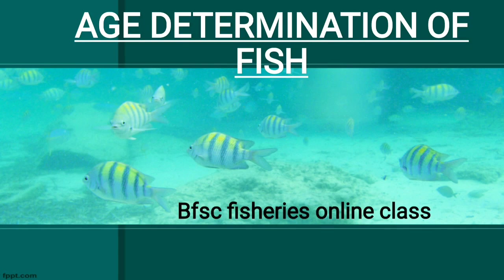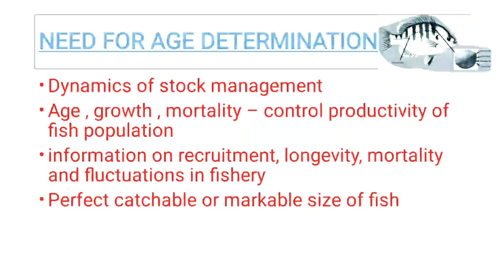Age is the length of time through which an organism has lived or is living — the stages it has crossed in its lifetime. Growth is a characteristic feature of a living being; growth determines the size of an organism over a period of time, showing how much an individual has grown.